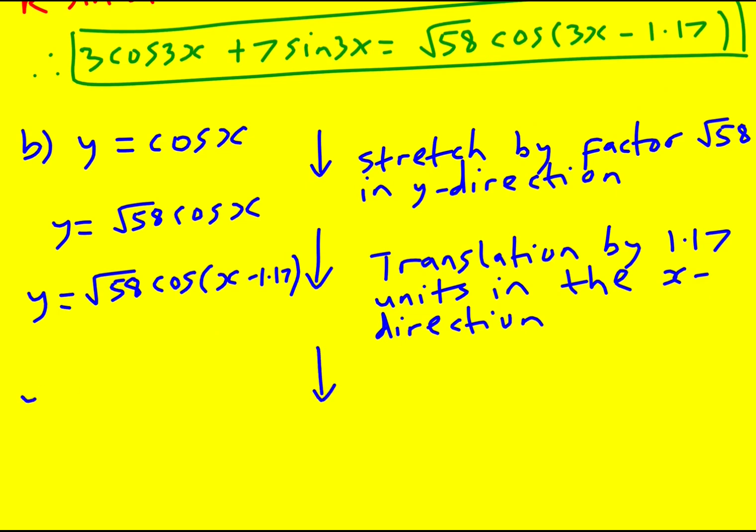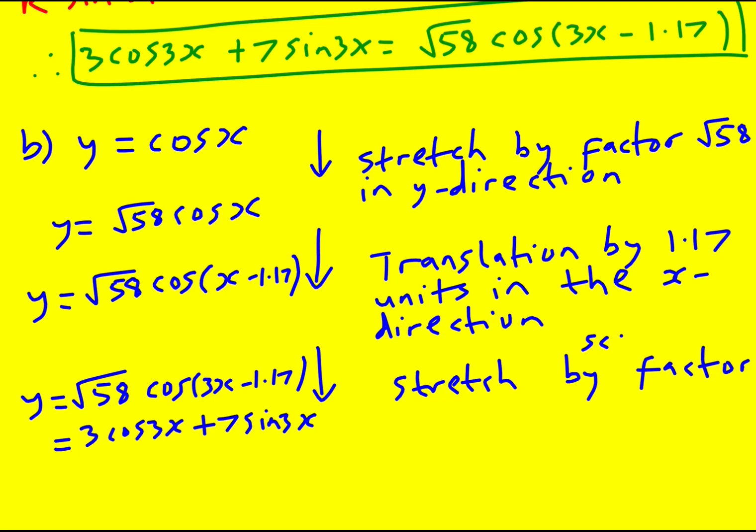And then finally, we want the actual root 58 cos of 3x minus 1.17, which let me just remind you is equal to that 3 cos 3x plus 7 sine 3x. And that would be a stretch by scale factor - and because again, it's inside with times by 3, you actually do a stretch by factor of one-third in the x direction.